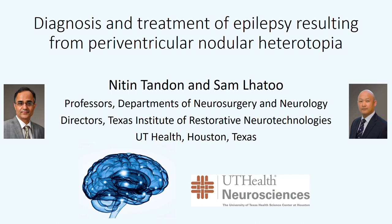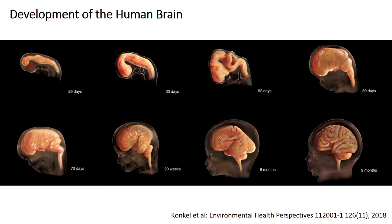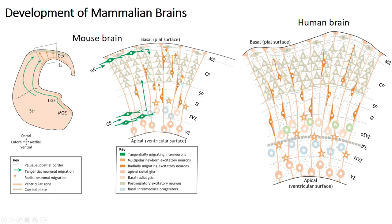We're going to walk you through the disorder that we're interested in today, periventricular nodular heterotopia. We recognize it's a mouthful, but it's a very specific terminology for a disorder that occurs in brain development. All mammalian brains start off as a hollow tube that forms very early on in embryology, and then folds in various complex ways to achieve its desired size and shape in a newborn baby. This tube starts off with cells that line its boundaries, and these cells then migrate or move in a radial fashion to get to their targets in the cortex.